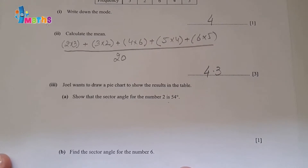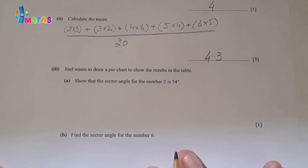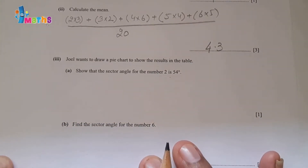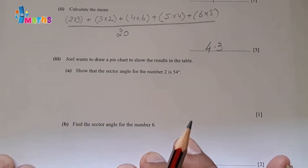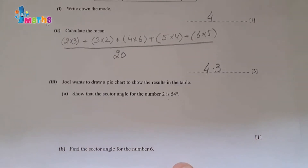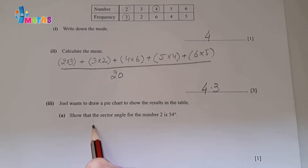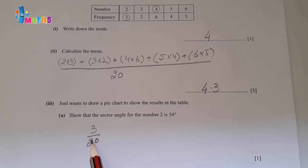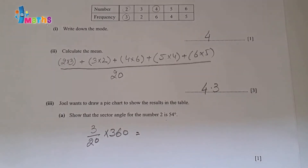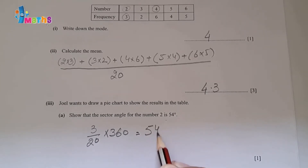Show that the sector angle for the number 2 is 54 degrees. The frequency for number 2 is 3. So the calculation is 3 out of 20, multiplied by 360 degrees. Using the calculator: 3 divided by 20, multiplied by 360, equals 54 degrees, which is the required result.